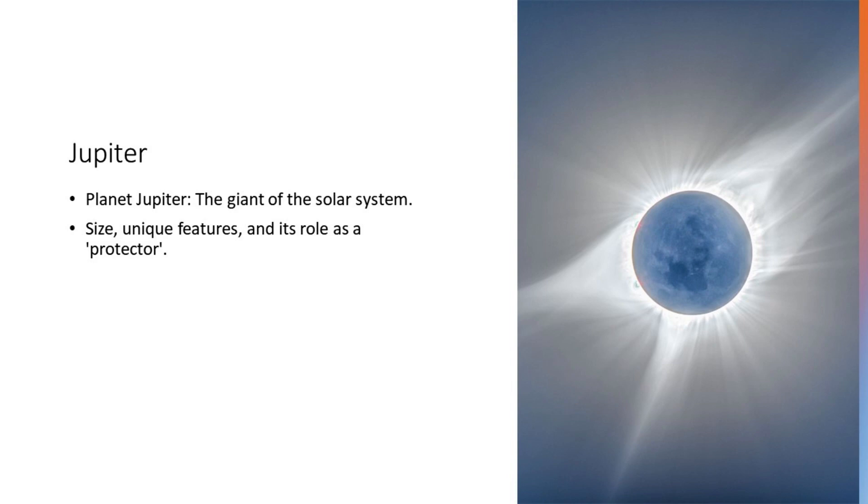Jupiter, the giant of our solar system, is not just a planet, it's a miniature solar system in itself, with a retinue of moons and a mesmerizing array of storms. The Great Red Spot, a colossal storm raging for centuries, offers a glimpse into the turbulent atmosphere of this gas giant. Studying Jupiter provides valuable insights into planetary formation and the dynamic processes shaping our solar system.